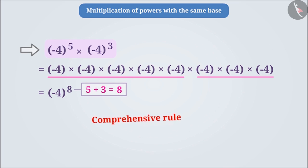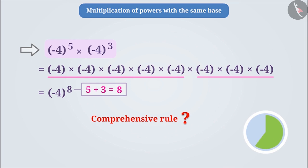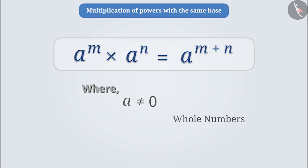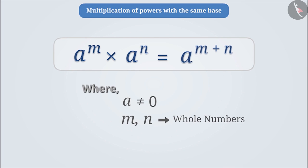Can you make a comprehensive rule for multiplying the powers of the same base? We can say that for a non-zero integer a and whole numbers m and n, a to the power of m into a to the power of n is equal to a to the power of m plus n. This means that if numbers with exponents are multiplied, we add all the powers and write the result as the power of the base.